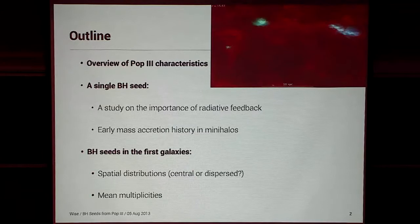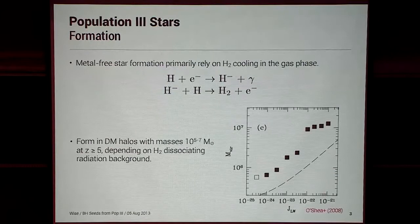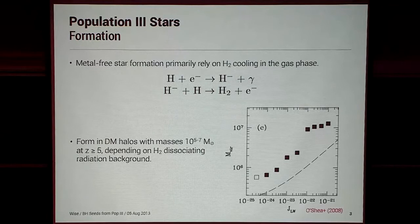I want to start on some chemistry basics on why do these Pop III stars form and why are they massive. In the early universe, we only have hydrogen, helium, and some lithium. Because we have no metals, we have no dust, and so metal-free star formation primarily relies on H2 formation. You have this set of reactions where you can form H2 in the gas phase and not on dust grains.